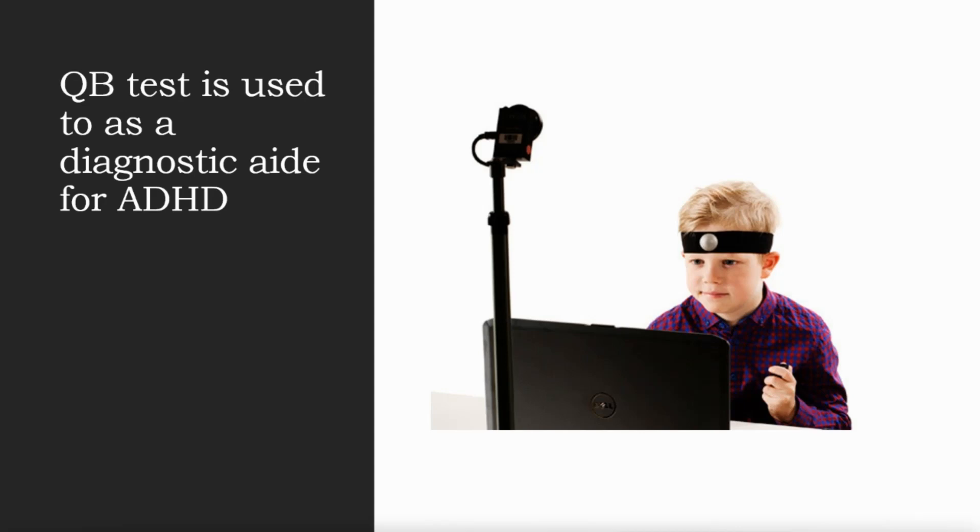It's tracking all the movements this child's making as well as he's taking a test on the computer that you will be seeing in the office. The QB check is something that can be done at home, it's online and it's very similar. It just uses the patient's video camera in their laptop or computer to do similar tracking, it's just not as accurate.